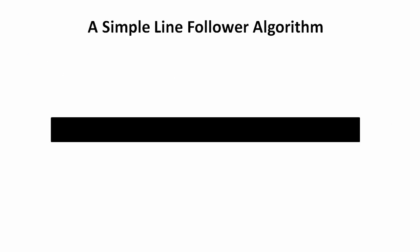Before we start programming, let's look at what the line follower algorithm is. It actually doesn't follow the line itself — what it follows is the transition between the two colors. It's a really simple algorithm. If you're over here on the white or light surface, you create a program that slowly turns to the left. As soon as the sensor sees the dark surface, it slowly turns to the right, and it just goes back and forth around this transition.